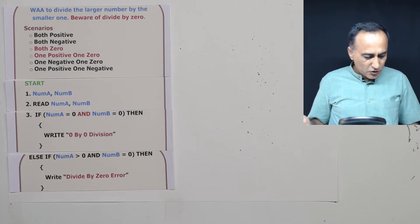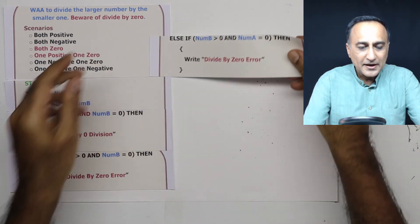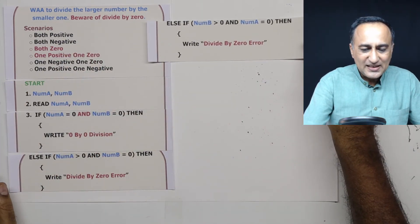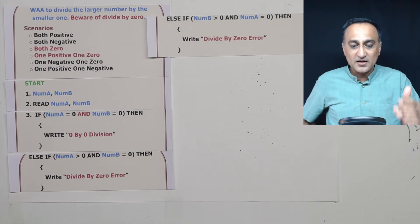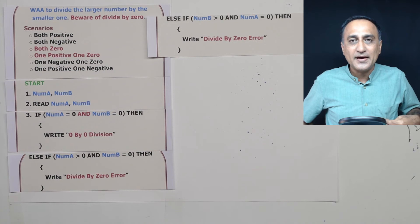So in this problem case what I am doing here is again I am saying divide by 0 error. Now I have taken care of two major problems. I have still one more issue where number B is greater than 0 and number A is equal to 0. This is again a problem for me. So I am writing divide by 0 error.